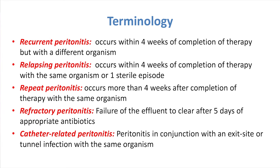This is the terminology that probably confuses the field of peritonitis, but it is important to know. A recurrence of peritonitis is that which occurs within four weeks but with a different organism. Relapsing peritonitis is within four weeks with the same organism. Repeat peritonitis is when you get the same organism but more than four weeks away. The reason that's important is that relapsing and repeat peritonitis implies you've got a biofilm and that you should be exchanging the catheter.